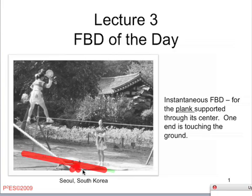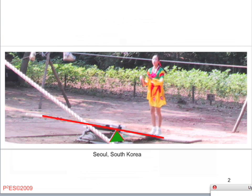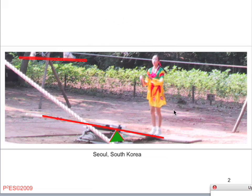Let me show you a color version of this picture and see if that helps in terms of the description. This is a blown-up view, and I've highlighted the pieces. You can see that the legs of the one individual are out of the picture. So really, in this view, you can think of it as being static.